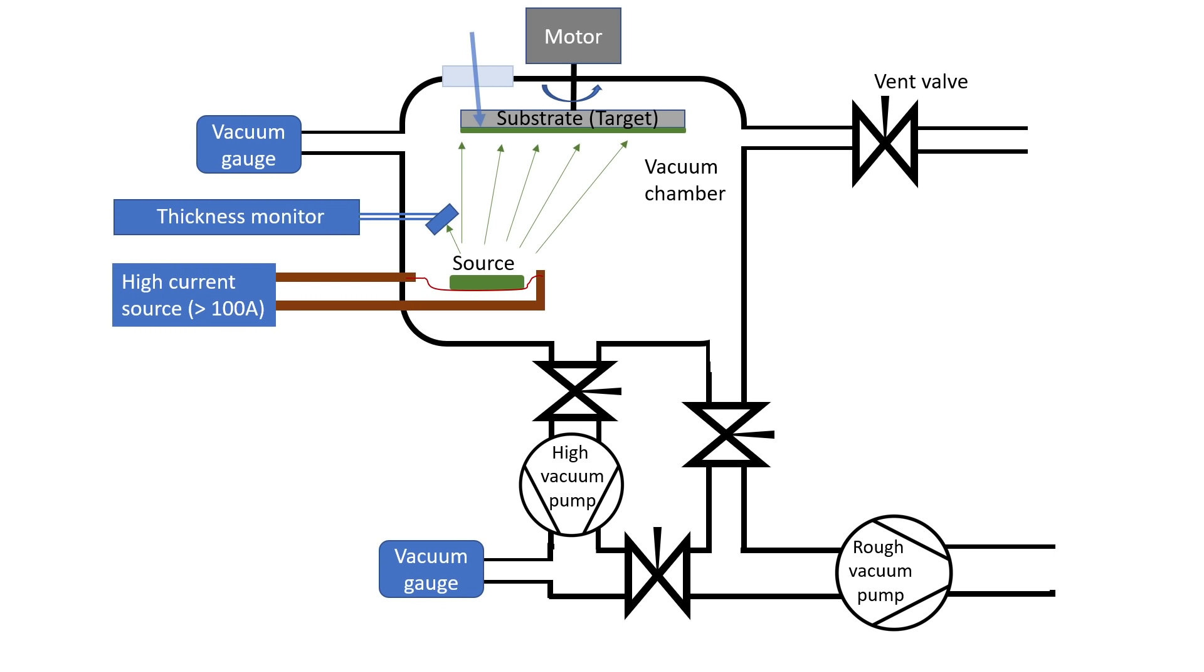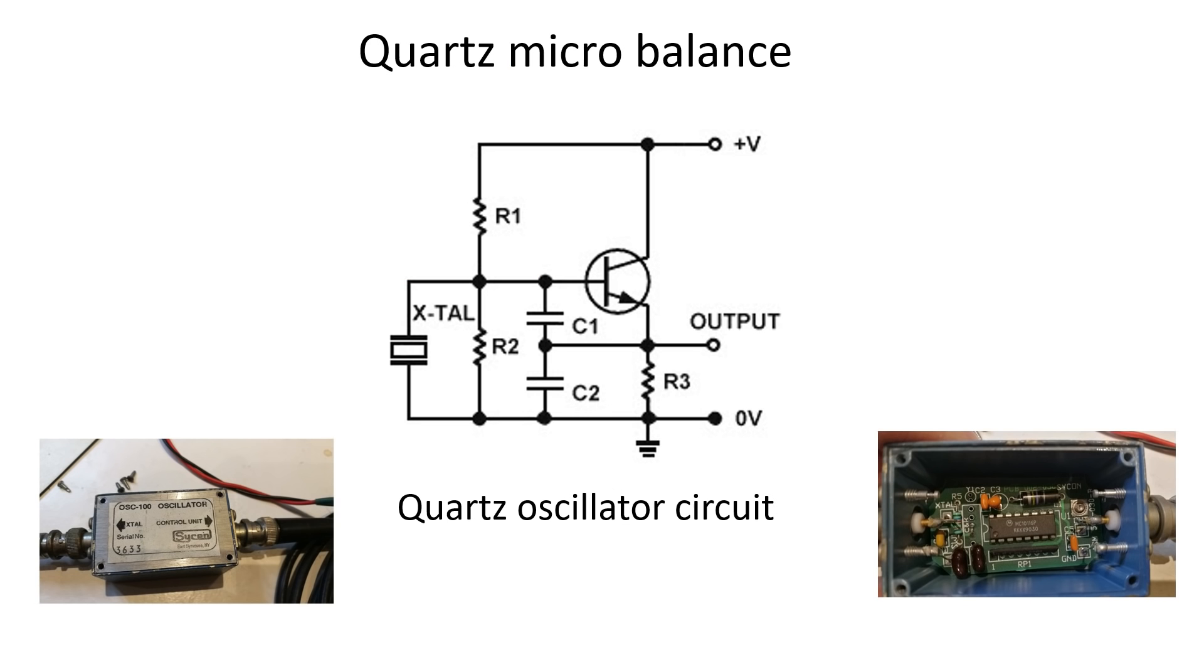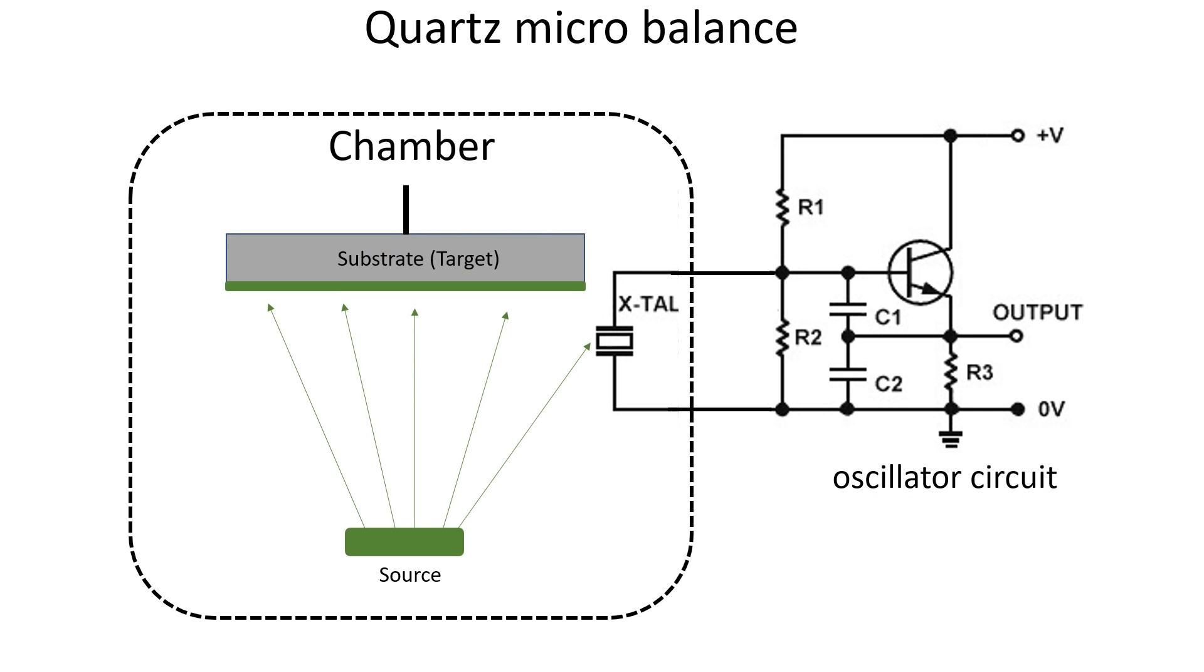This works by measuring the resonance frequency of a small resonator circuit, which incorporates a quartz crystal. The quartz crystal is placed inside the chamber in such a way that it is exposed directly to the evaporation process. During the evaporation of the layer, the mass of the crystal increases which decreases its resonance frequency. By very accurately measuring the shift in the resonance frequency, we can therefore determine the rate of deposition.